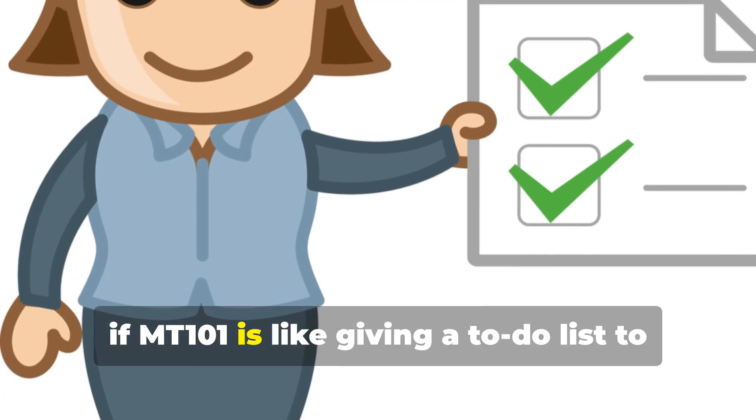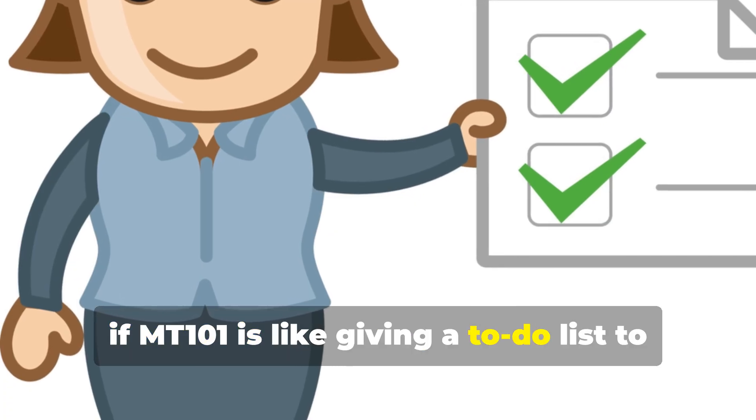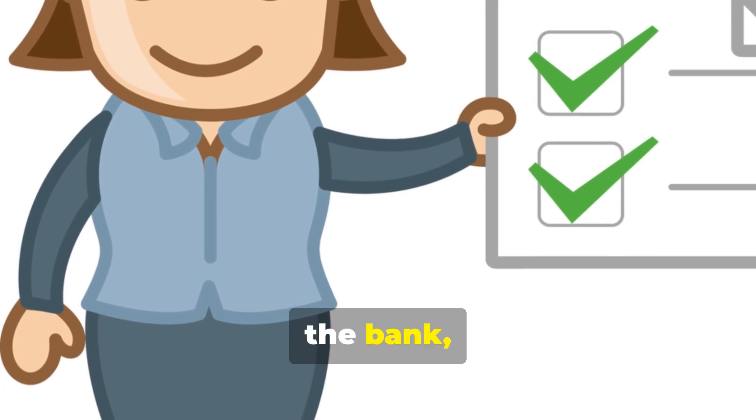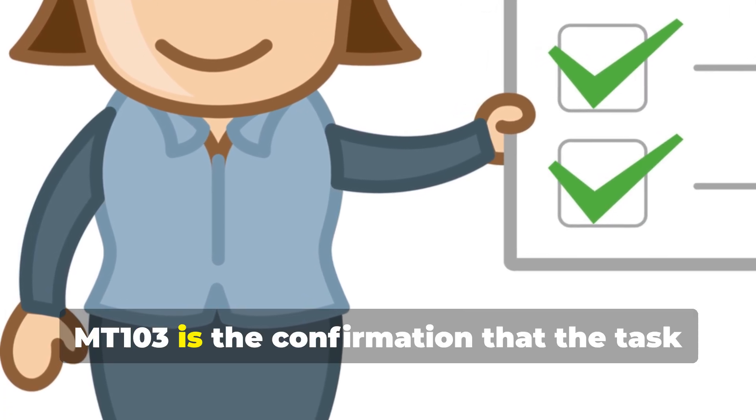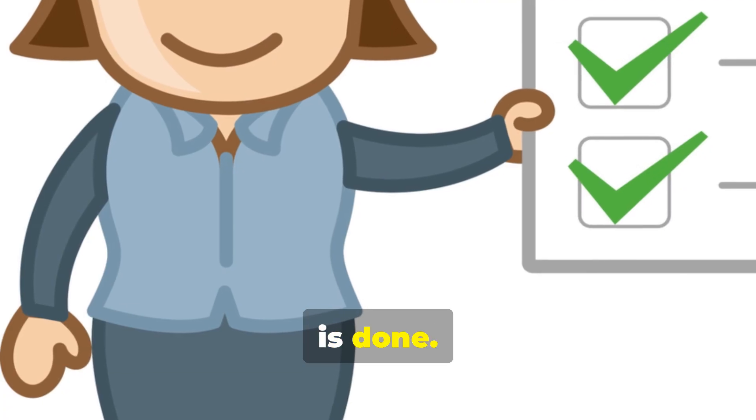So if MT101 is like giving a to-do list to the bank, MT103 is the confirmation that the task is done.